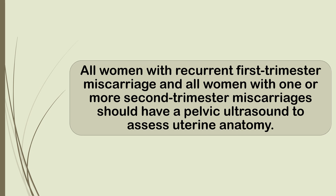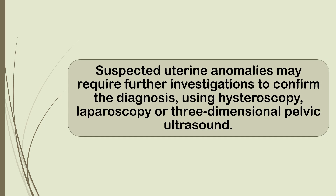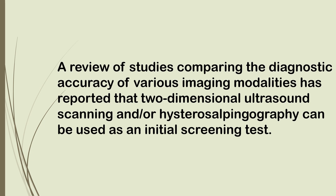Anatomical factors. All women with recurrent first trimester miscarriage and all women with one or more second trimester miscarriages should have a pelvic ultrasound to assess uterine anatomy. Suspected uterine anomalies may require further investigations to confirm the diagnosis using hysteroscopy, laparoscopy, or three-dimensional pelvic ultrasound. Two-dimensional ultrasound scanning and/or hysterosalpingography can be used as an initial screening test.